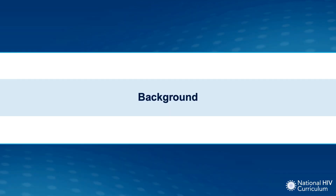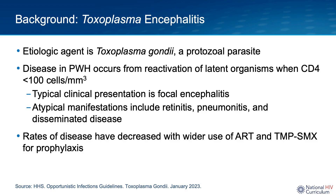Toxoplasma encephalitis is caused by toxoplasma gondii, which is a protozoal parasite. In people with HIV who have been previously exposed to toxoplasma gondii, active disease occurs when the individual becomes very immunocompromised — that is when their CD4 count drops to less than 100. When this happens, the toxoplasma cysts can reactivate and cause disease. The main symptoms associated with reactivation are focal encephalitis, but retinitis and pneumonia have also been described. With the widespread uptake of combination antiretroviral therapy and trimethoprim sulfamethoxazole prophylaxis, the rates of toxoplasma encephalitis have decreased within the United States.